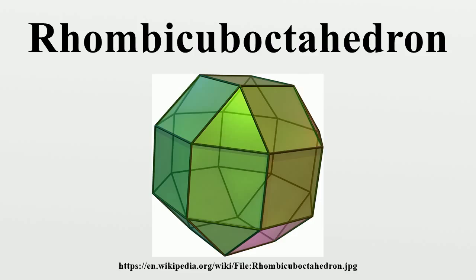In the pseudorhombic arboctahedron, the vertices are all locally the same as those of a rhombic arboctahedron, with one triangle and three squares meeting at each, but are not all identical with respect to the entire polyhedron.